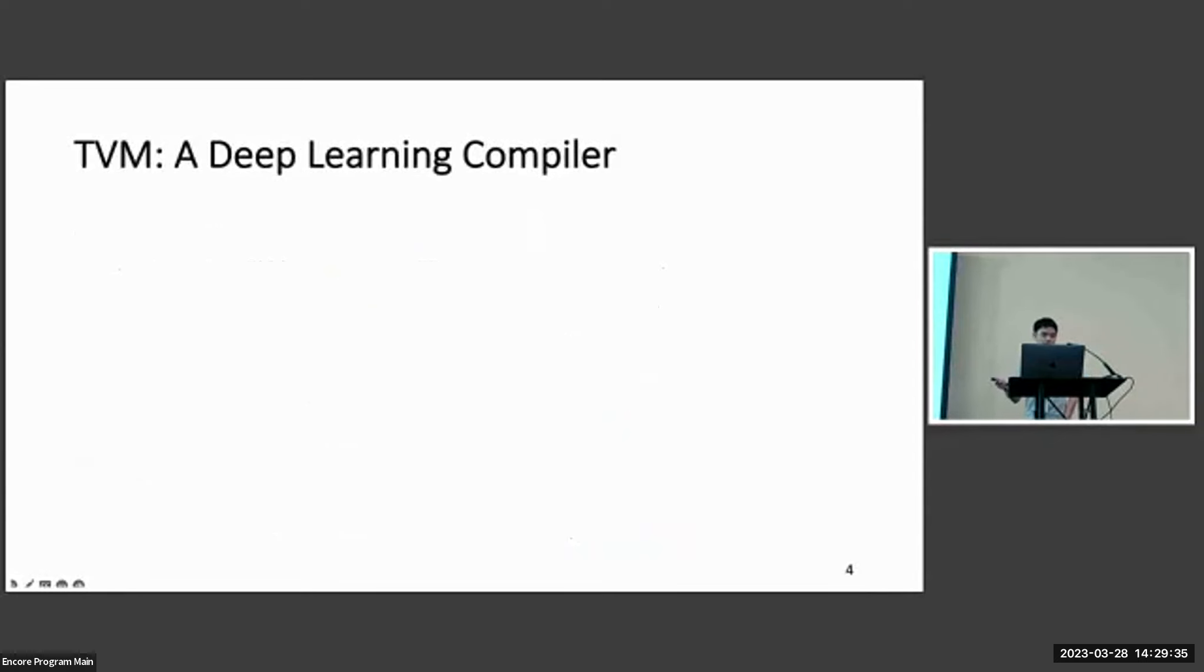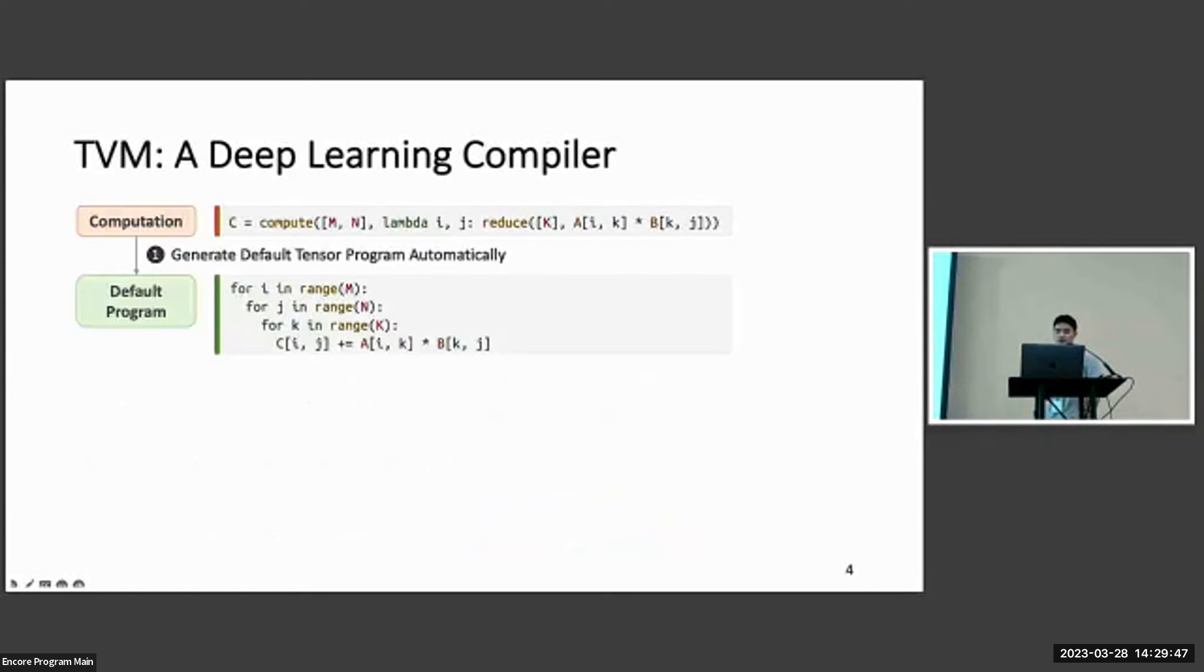Let's first have a look at what TVM does and why it has limitations. For each operator in TVM, we have a computation definition which defines how each element in the output is calculated mathematically, and we will generate a default tensor program automatically from the computation definition. Usually, this default program is very slow.